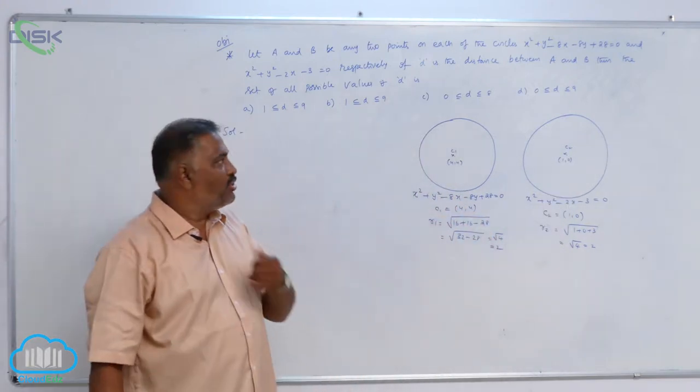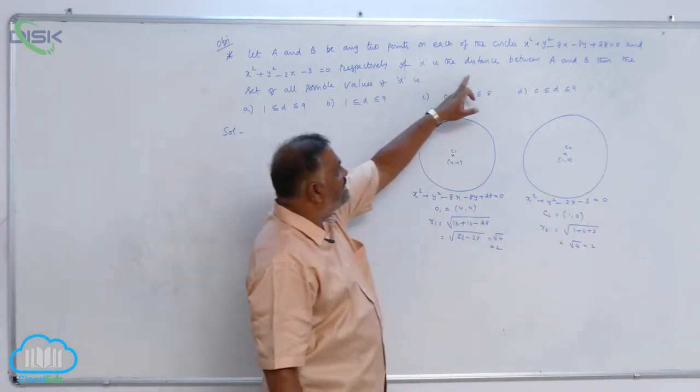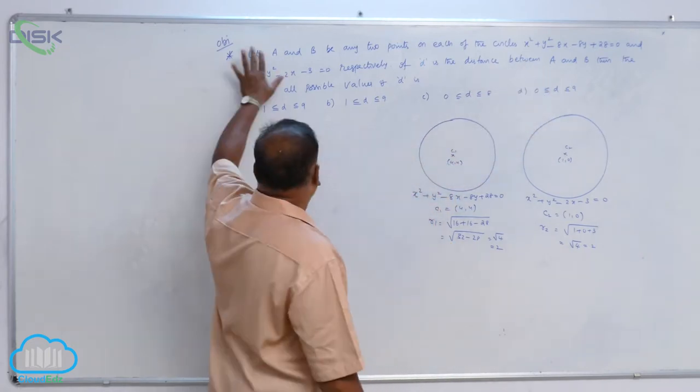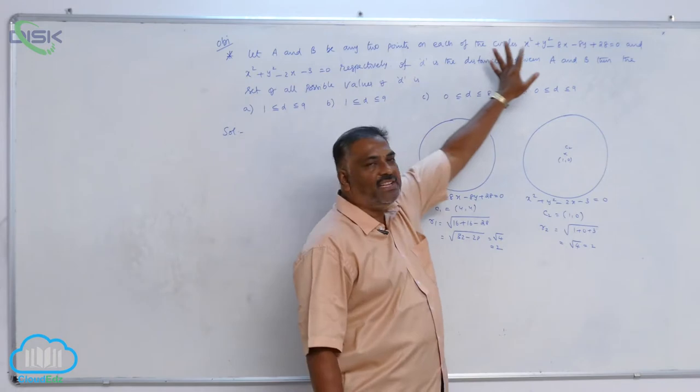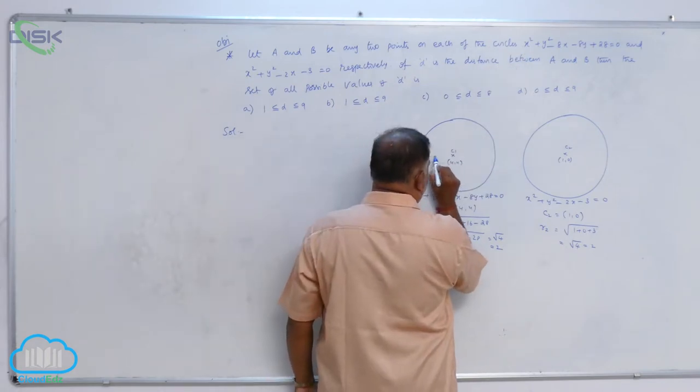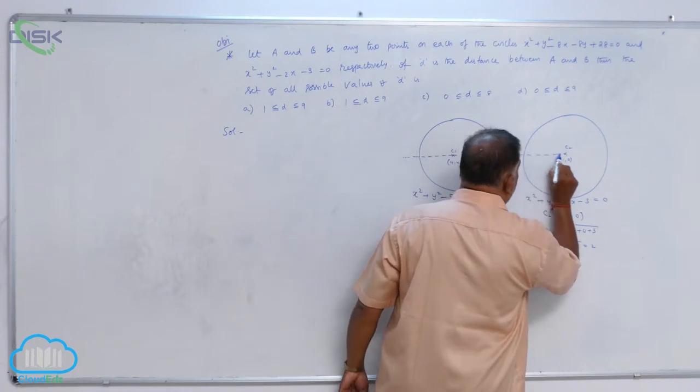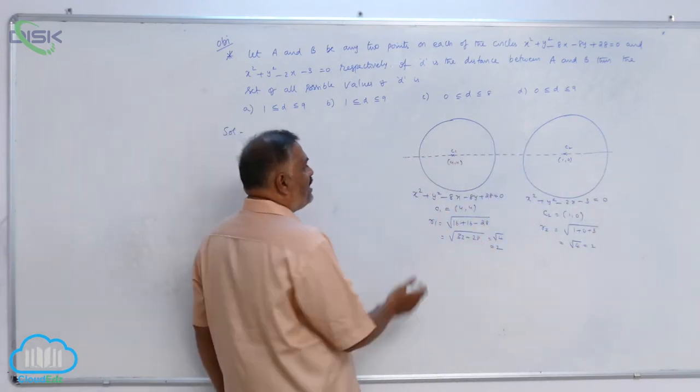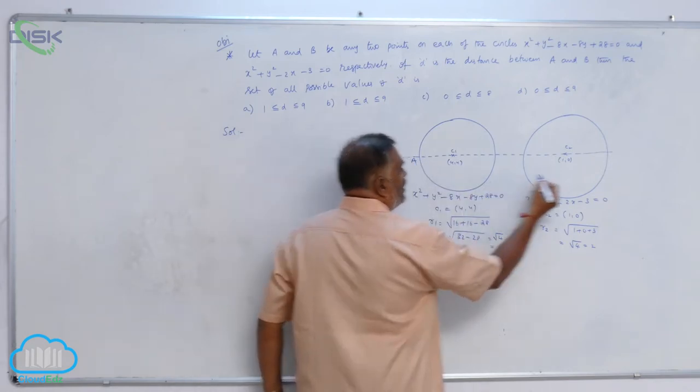Now, let us come to the problem. If D is the distance between A and B, what are A and B? A and B are two points, one on each of the circles. Suppose you draw a straight line joining the line of centers like this. The maximum distance of A and B is possible like this.